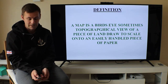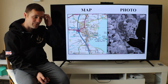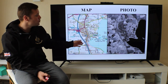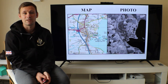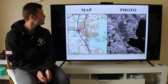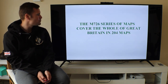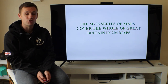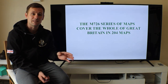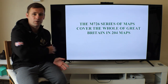Here is a map and here's a photo — we take a photo of a piece of land and draw it to scale on an easily handled piece of paper. That's how maps are made. The M726 series of maps covers the whole of Great Britain in 240 maps, starting from the southwest of England and finishing at the northwest of Scotland.